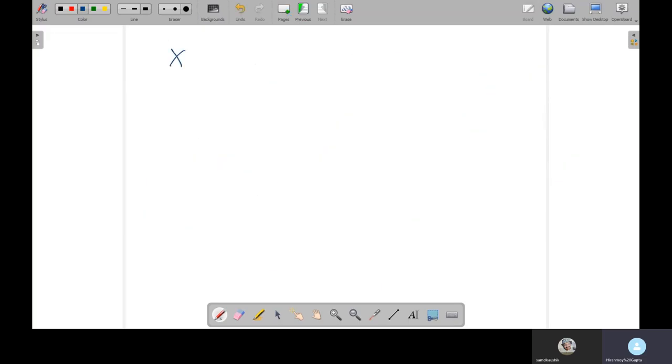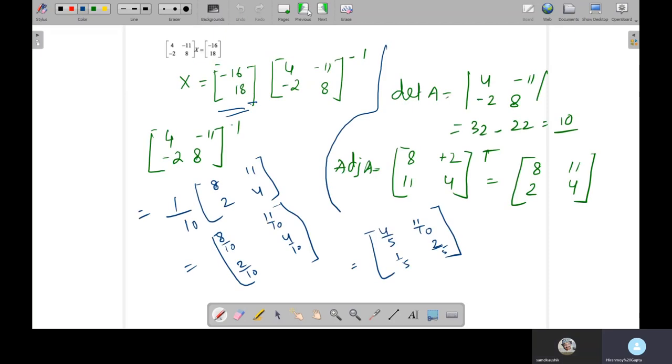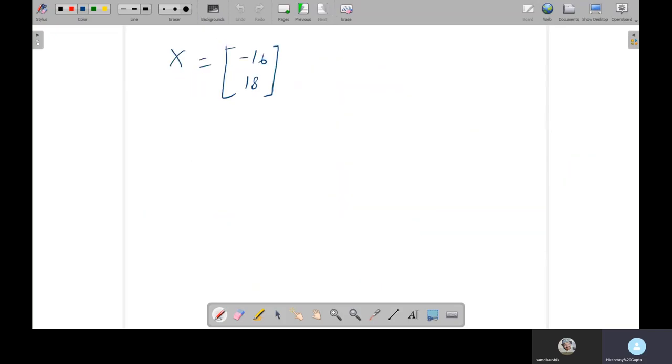So I'm writing over here, it equals minus 16 and 18. Previous page is saying 4 over 5, 11 over 10, 1 by 5, 2 by 5. So you can write 4 over 5, 11 over 10, 1 over 5, and 2 over 5. So this one you have to multiply.